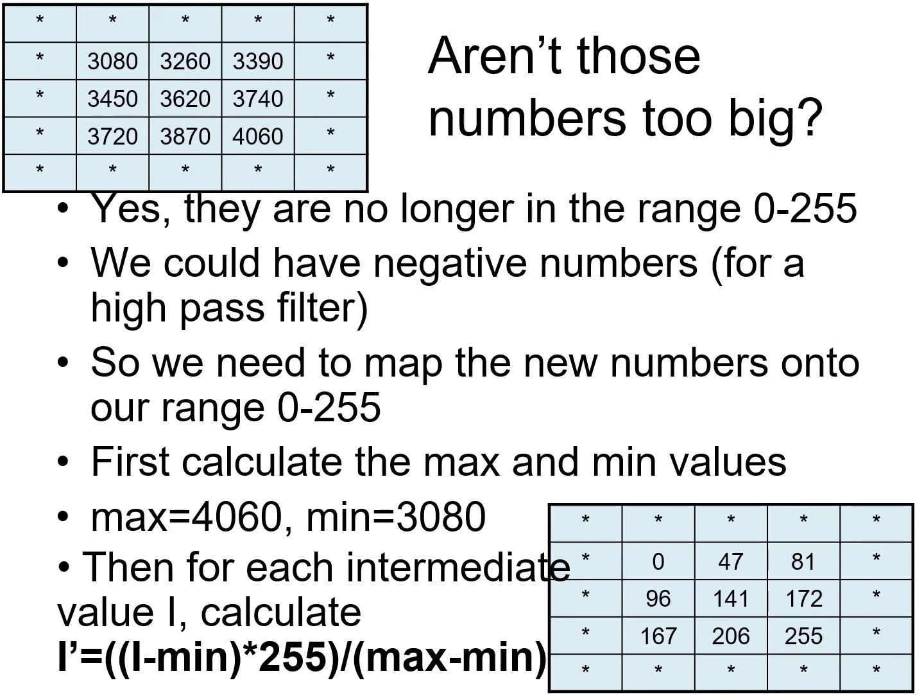The intermediate array can contain large values. It can also contain large negative values when filters with negative values, such as edge detectors, are used. To return the image to 0 to 255 we use the process of normalization. We will use a linear mapping from the intermediate values back to the 0 to 255 range, or 0 to 1 range if using the 0 to 1 floats to represent the colors. For the mapping we already have the minimum and maximum values from the intermediate array. Minimum has to map to 0 and maximum to 255.